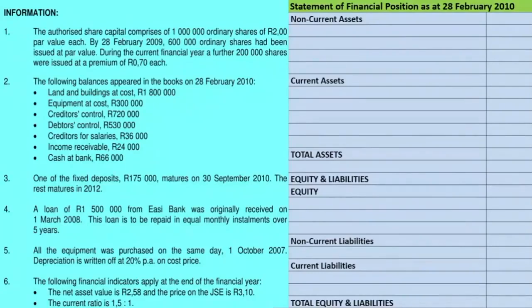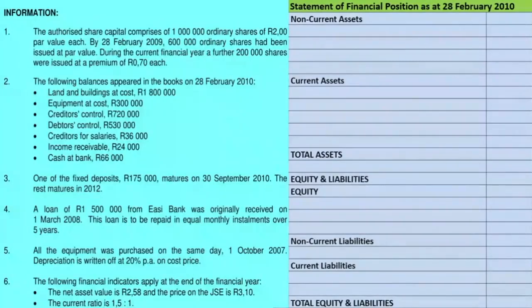Another thing to note here is the premium. If a share is issued at a premium, that means it is issued at an amount over and above the par value. So if the premium is 70 cents each, the shares were issued at two rand plus 70 cents, which is two rand 70 cents each. When we record our ordinary share capital, we record it at par value, and the share premium is recorded separately. So even though some shares were issued at a premium, we record them at par value and then record the share premium separately.